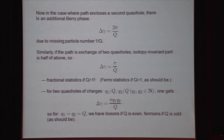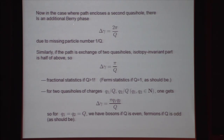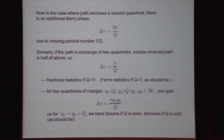We can do a very similar calculation if we have a second quasi-hole and drag the first one around a path that encloses the second quasi-hole. We just reconsider the density being integrated. My first quasi-hole is far from the second one, so the rotation symmetry argument still works thanks to screening and exponential decay of correlations. But now there's an additional charge missing from the inside of the contour due to the charge of the other quasi-hole, and that number density is 1 over Q. So there's an additional Berry phase delta gamma of 2 pi over Q, very precisely defined up to exponentially small corrections.